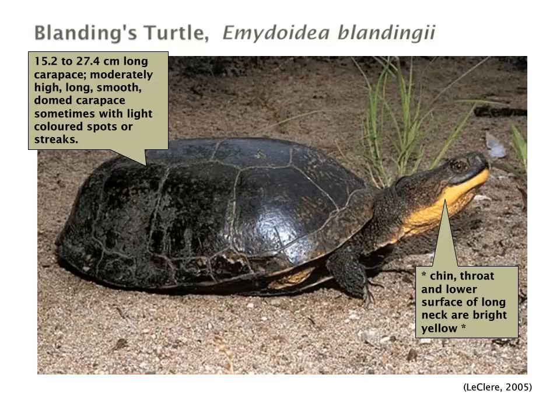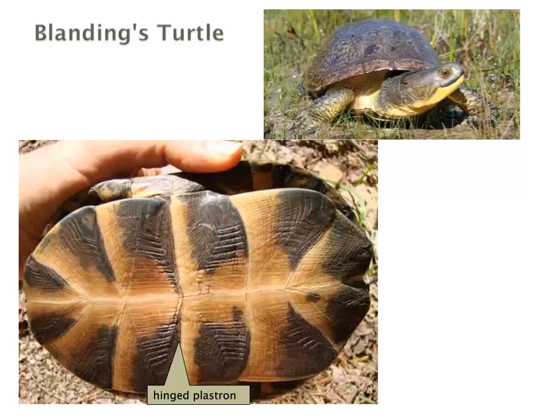The Blanding's turtle is a relatively larger turtle with a smooth, long, domed carapace, sometimes with light-coloured spots or streaks. Its chin, throat, and lower surface are bright yellow. One of the interesting features is its smile — if you notice its lips, they are always upturned, giving it a constant smile. The plastron has similar colouration to the wood turtle and the spotted turtle, only it's more textured. Uniquely to this species, it has a hinged plastron.